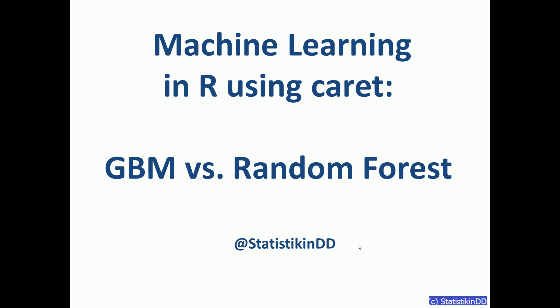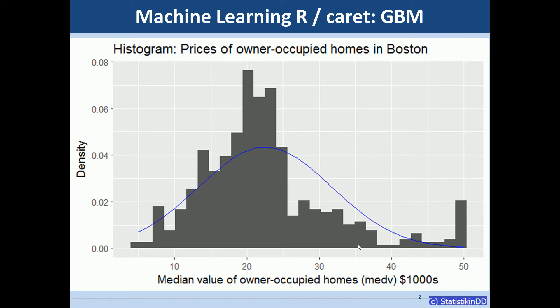And we'll compare a gradient boosting machine to a random forest model. The data we're using is called Boston. It's in the MASS package in R, and we're modeling the median value of owner-occupied homes. I'll call it home prices in short.